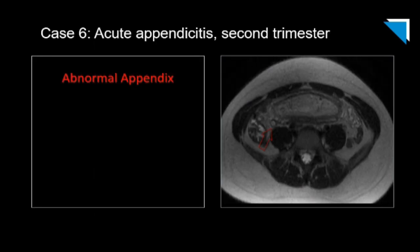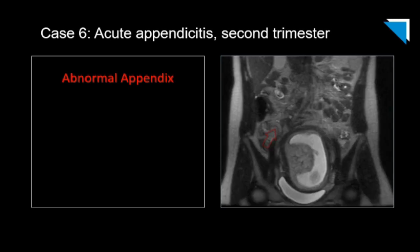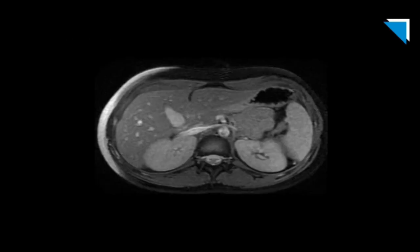Here's our last example of acute appendicitis. We see again a familiar right lower quadrant fluid-filled tubular structure compatible with an abnormal appendix, laid out mostly on a single coronal image. Here's the T2 fat-suppressed axial sequence.